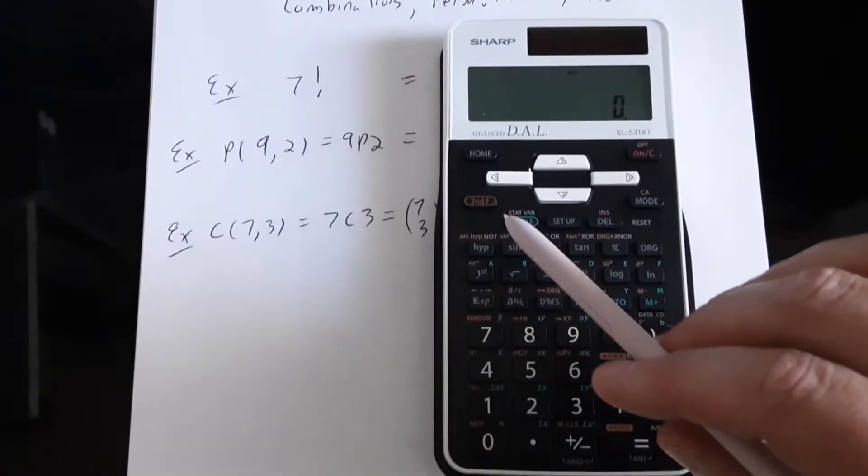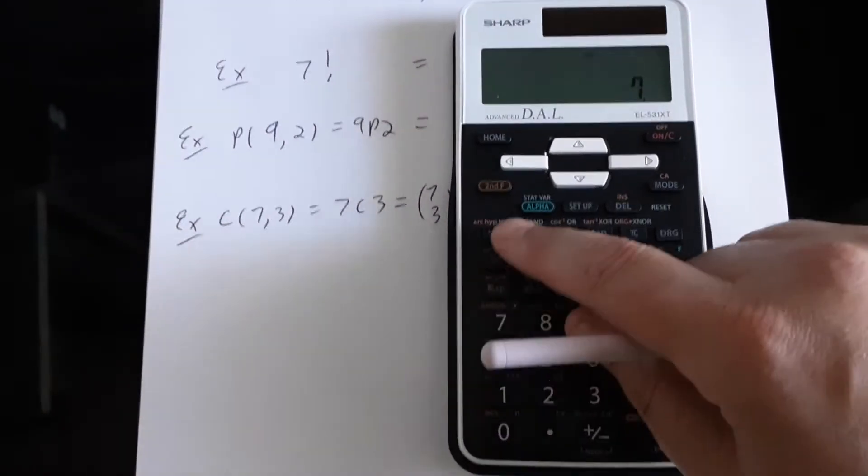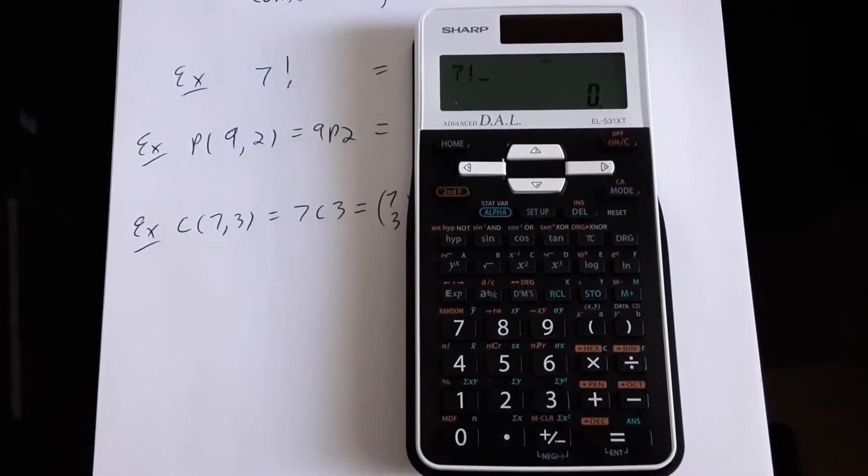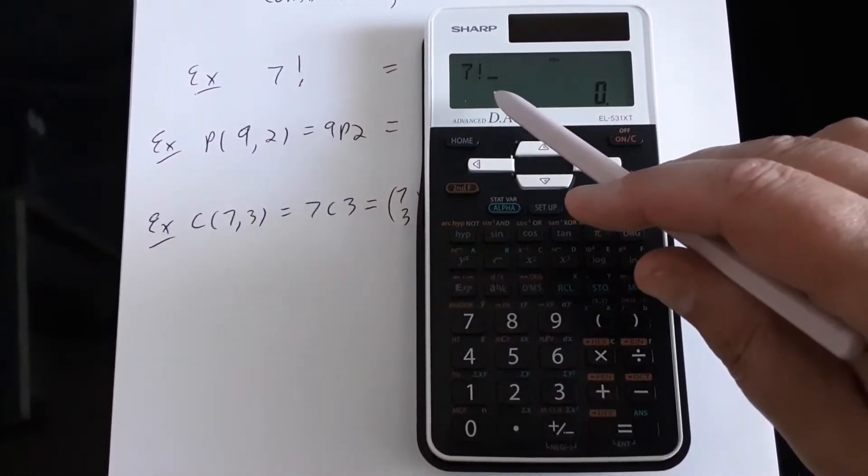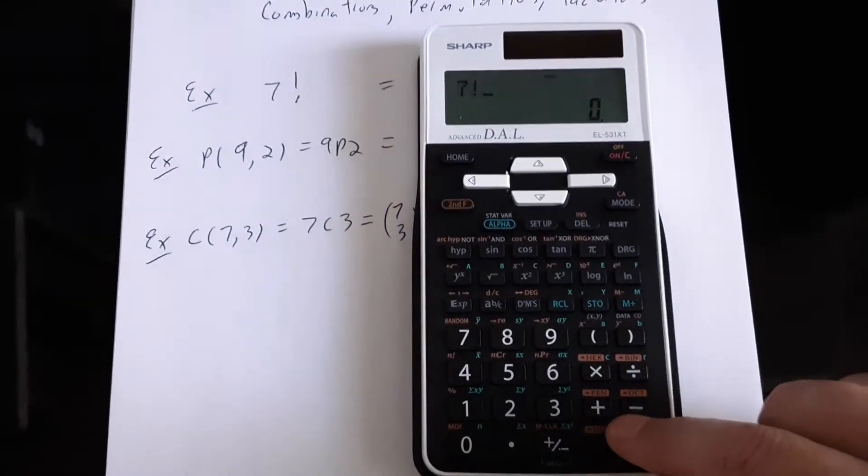So for the first part we would like to know what is 7 factorial and I would enter 7, second function 4, that's where the factorial function is. We can see in the display window 7 with an exclamation mark so we have 7 factorial.